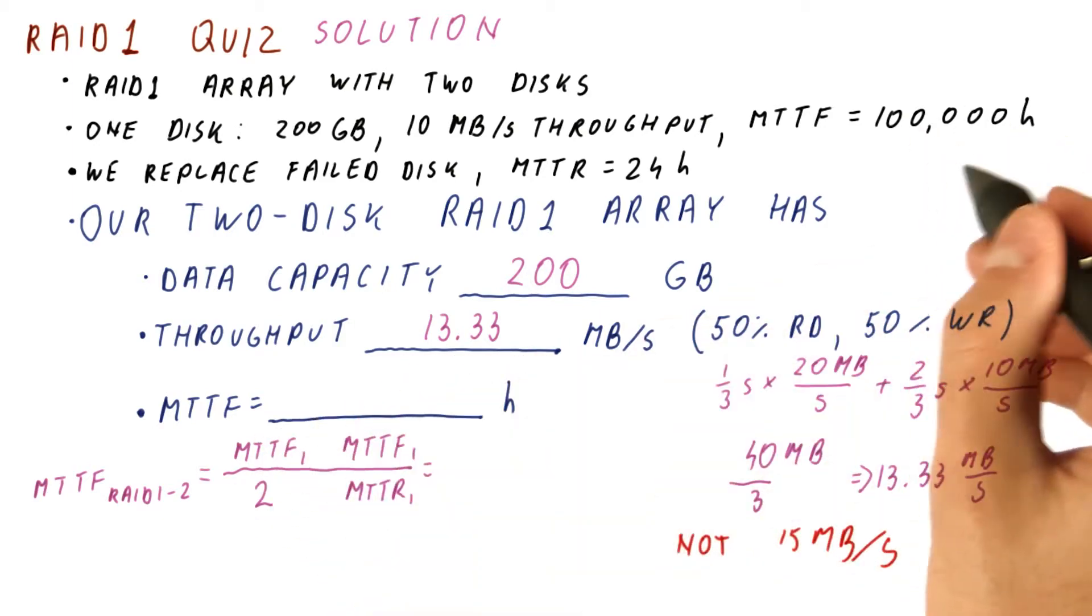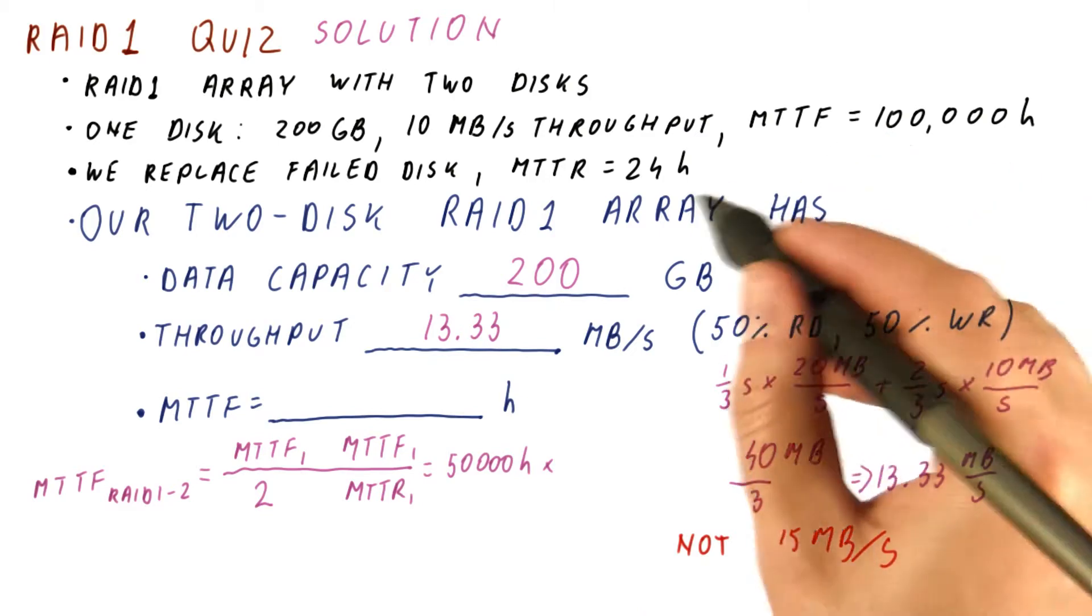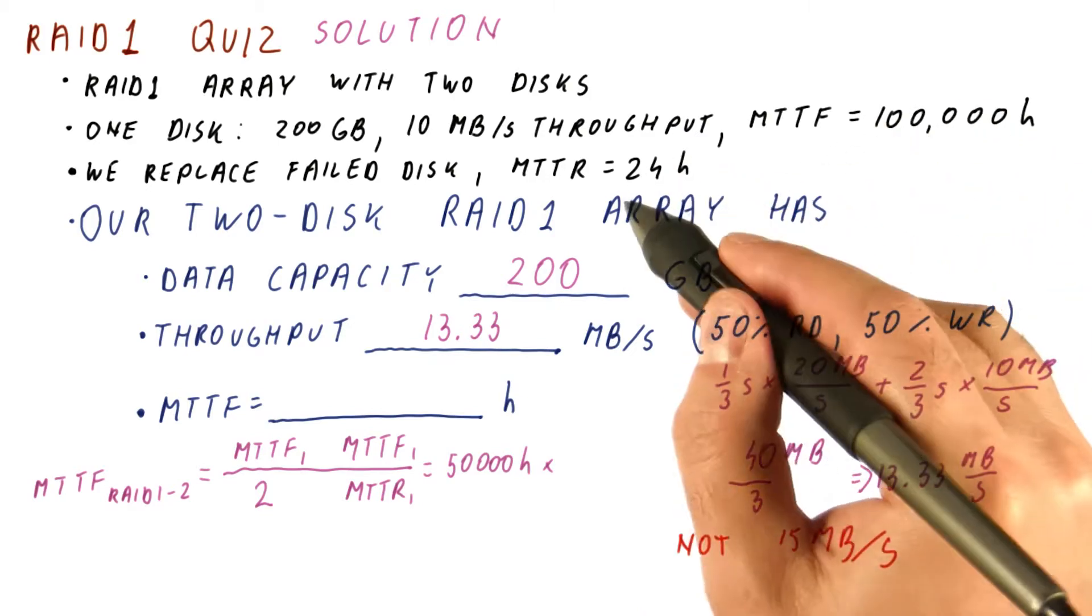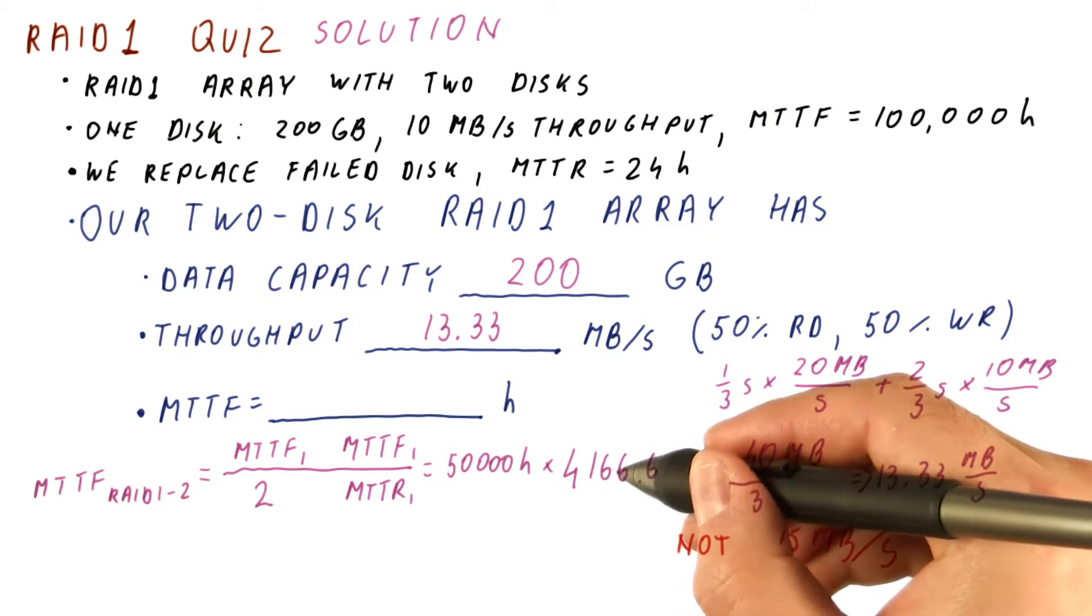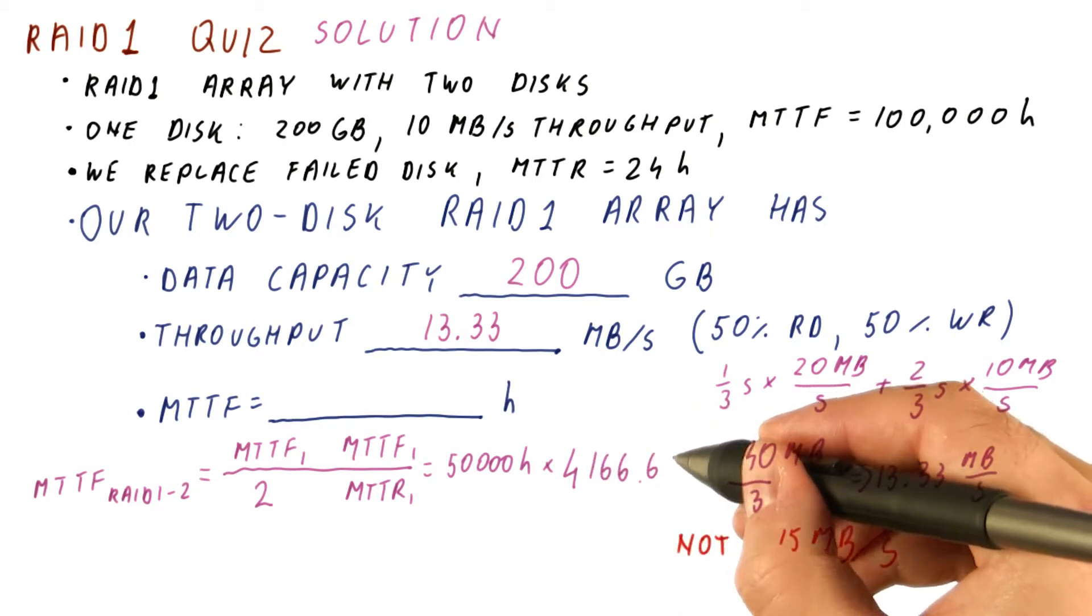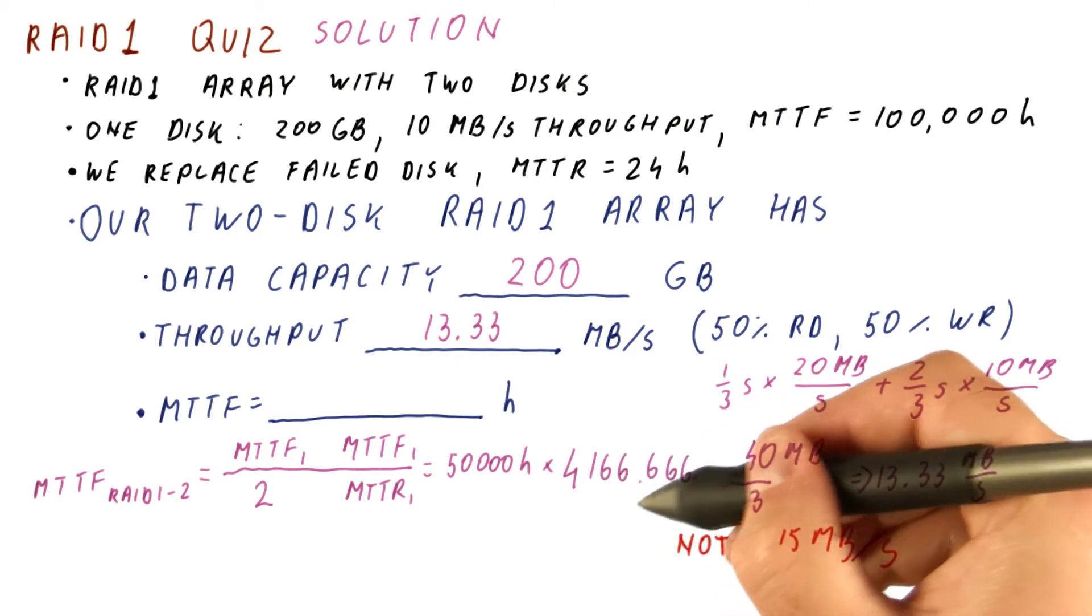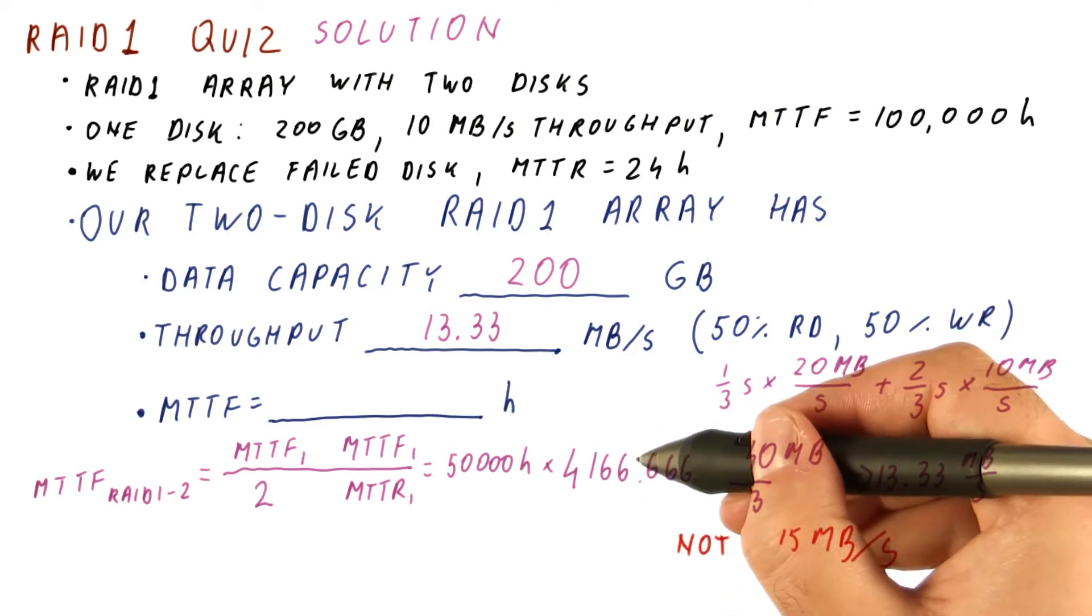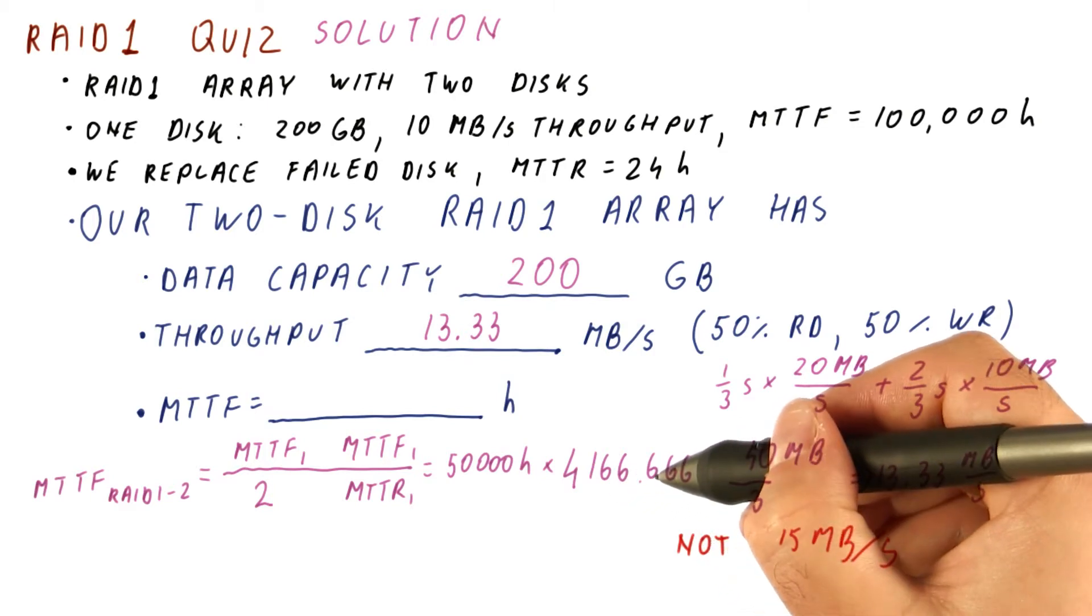So this first factor would be 50,000 hours. The second factor is the ratio of the time to failure and the time to repair. And when we divide these two, we get 4,166.666. So this is how many times can we try a repair while a single disk is working until we finally experience a repair in which the working disk also fails.